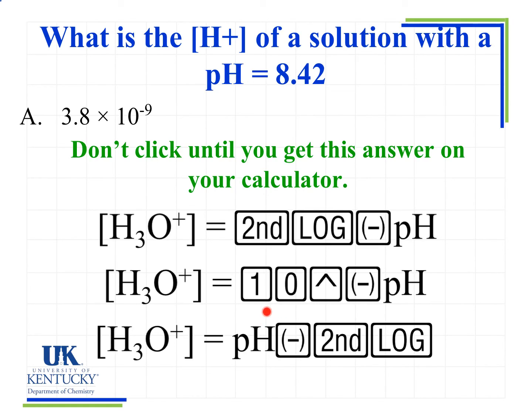For some calculators, you need to type in 10, so 1, 0, use the caret for the power, negative the pH value. On other calculators, you need to type in the pH value, then the negative sign, then hit second, log. Remember, you need to make sure you're using the log button, the LOG, and not the ln natural log. Once you've figured that out and gotten the answer, you want to click in. It should be 3.8 times 10 to the minus 9th.